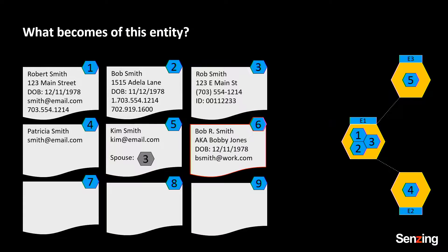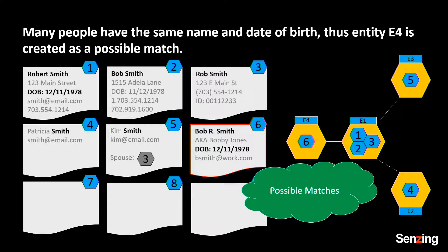Now it's going to get a little more sophisticated. Take a look at this record. There are really two choices, or three. It's either the same as entity one, or it's possibly the same — you can't be totally sure — or it would be just some relationship to something but no chance of being the same. In this case we would consider this a fuzzy match, because name and date of birth really aren't enough features to put two people together.